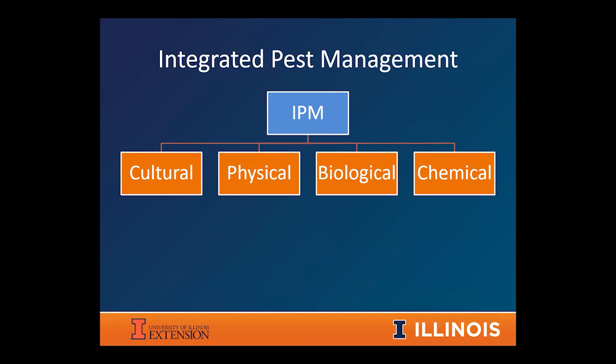When thinking about controlling invasive plants on a site, it's best to think about all of the tools in your toolbox. Land managers developed this hierarchy of integrated pest management where you use all different types of control to come up with the best possible solution. Those types are cultural, physical, biological, and chemical controls, often used in conjunction with one another to have the best result.